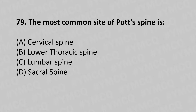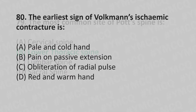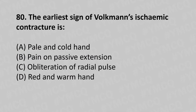Moving to our 79th question. The most common site of spinal tuberculosis is: option A cervical spine, option B lower thoracic spine, option C lumbar spine, option D sacral spine. The answer is option B, lower thoracic spine.